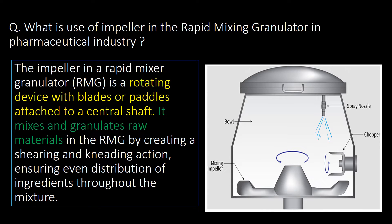What is the use of the impeller in Rapid Mixing Granulator in the pharmaceutical industry? The impeller in RMG is a rotating device with blades or paddles attached to a center. It mixes and granulates raw materials in the RMG by creating a shearing and kneading action, ensuring even distribution of ingredients throughout the mixture.